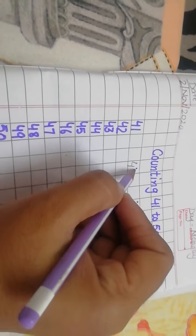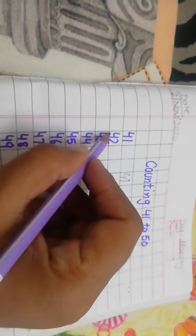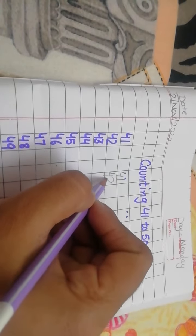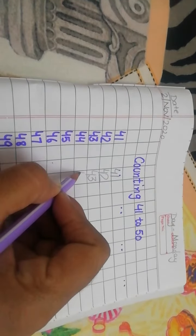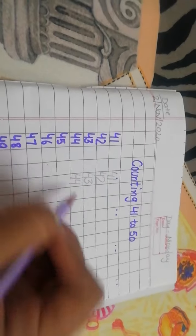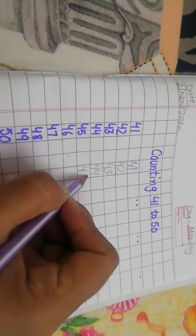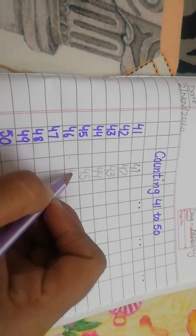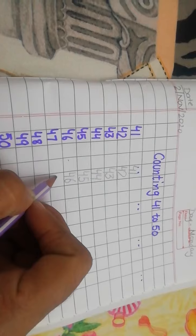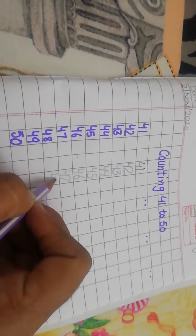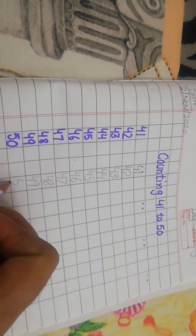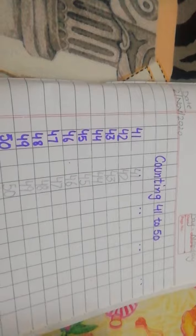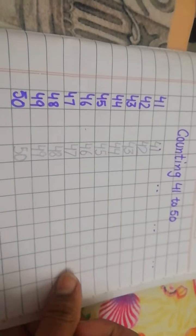42, 4-2, 42. 43, 4-3, 43 while speaking. 44, 4-4, 44. 45, 4-5, 45. 46, 4-6, 46. 47, 4-7, 47. 48, 4-8, 48. 49, 4-9, 49. 50, 5-0, 50. Dear student, now speak with me.